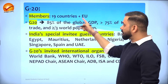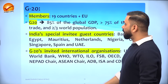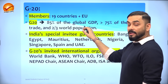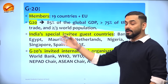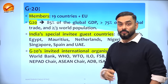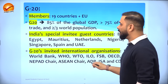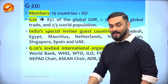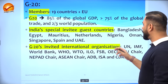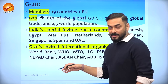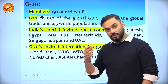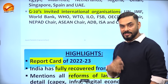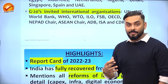G20 is special because it covers 85% of global GDP, more than 75% of global trade, and more than two-thirds of the world's population. India has also invited special guest countries during its G20 presidency: Bangladesh, Egypt, Mauritius, Netherlands, Nigeria, Oman, Singapore, Spain, and UAE. Additionally, several international organizations have been invited. We need to keep track of these details as they may be important from an exam perspective.